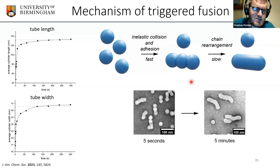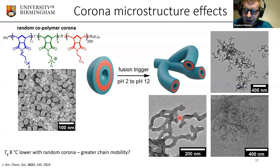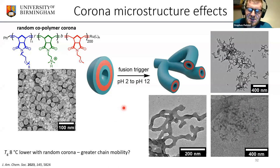Polymers can be complicated. Originally we formed three blocks by adding monomers sequentially to form a triblock copolymer. If instead we add the first two monomers simultaneously, the first block has those two monomers in a random order with no sequence control. This generates particles that look the same initially, but when we apply the pH fusion trigger we see higher-order aggregation rather than controlled fusion — showing that even seemingly small changes in polymer design can lead to quite different outcomes.